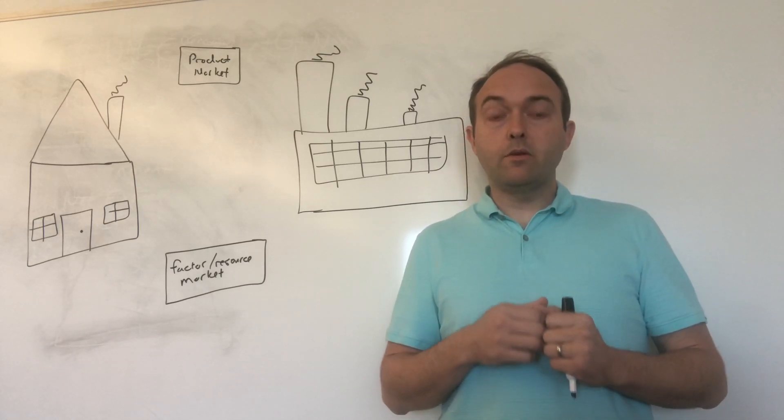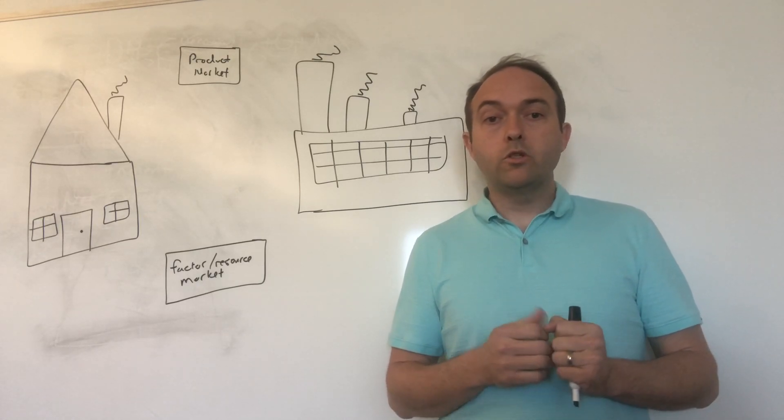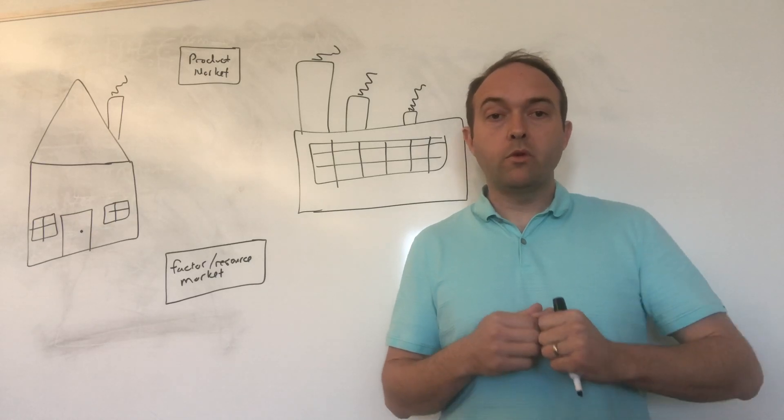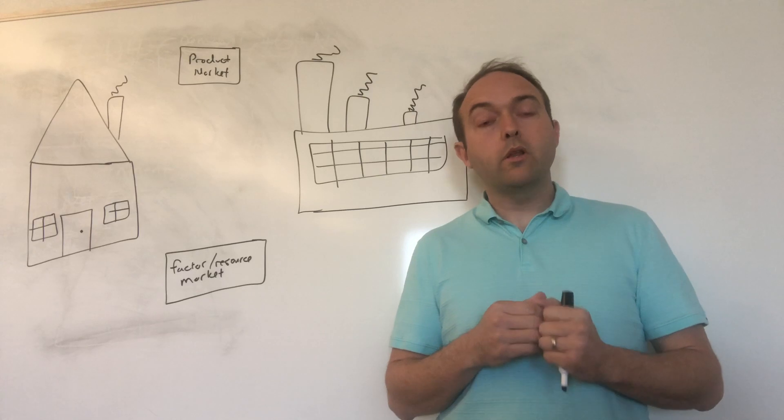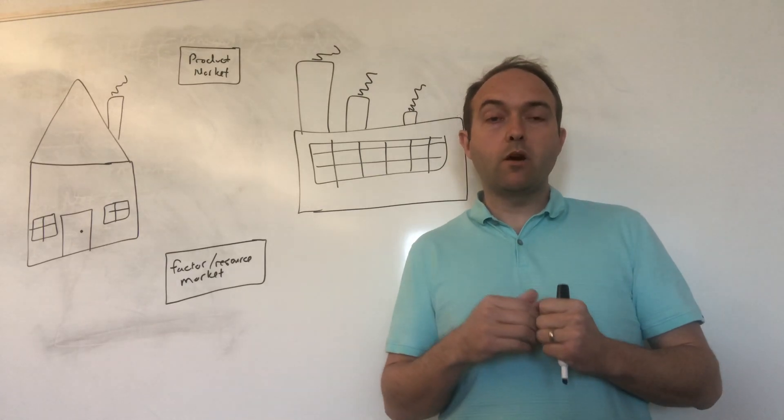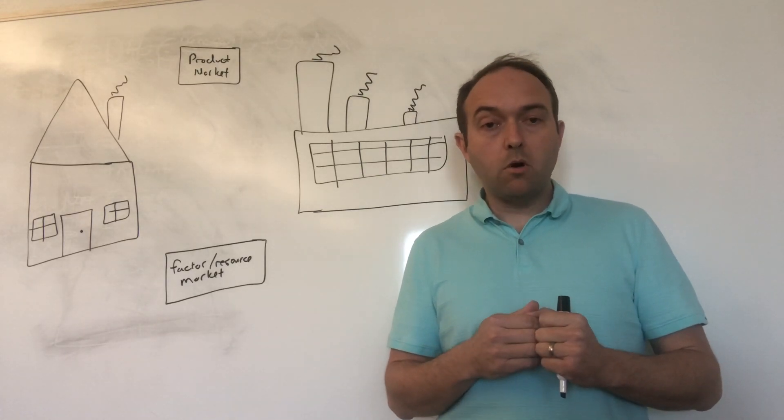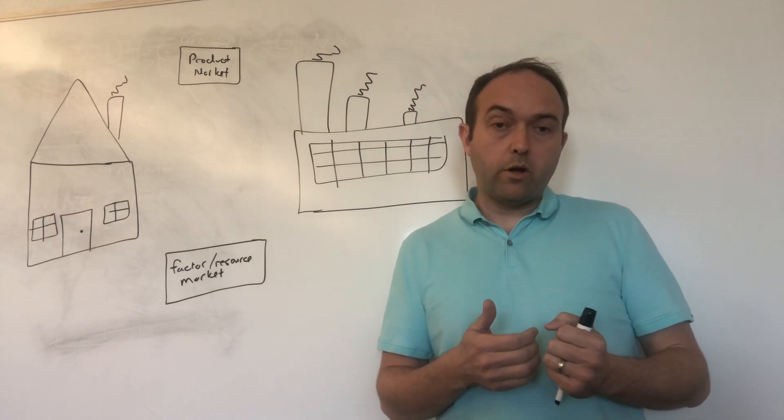The circular flow diagram is a simple illustration which shows how households and firms interact with each other. The two primary ways that we're going to think about households and firms interacting is in a product market and a factor or resource market.